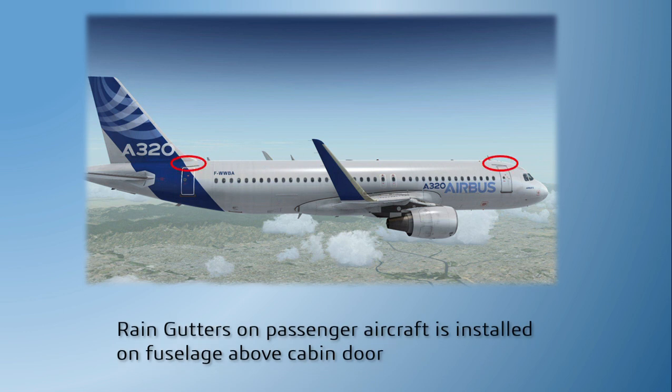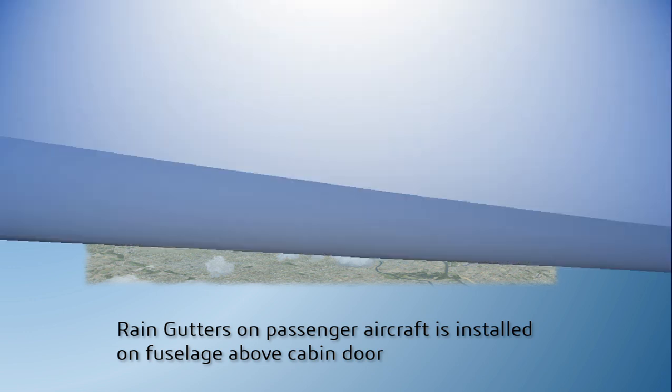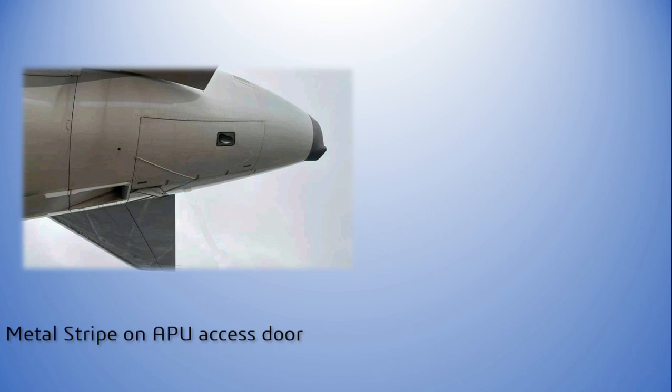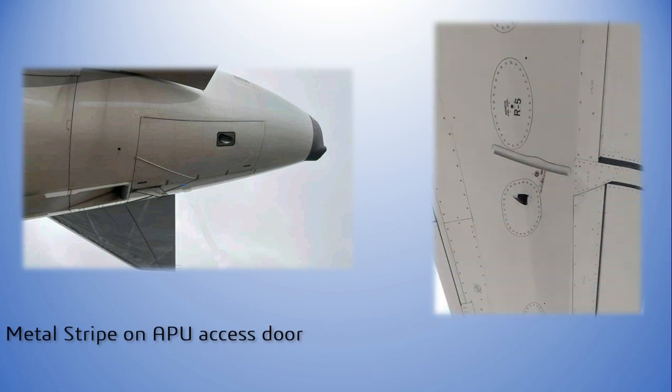The size of the rain gutter is limited due to aerodynamic drag. Therefore, in heavy rain conditions, to allow the rapid drainage of water, the rain gutter is usually installed in an inclined position.